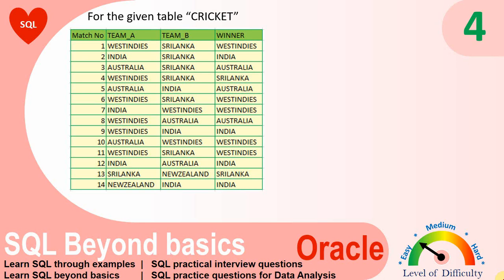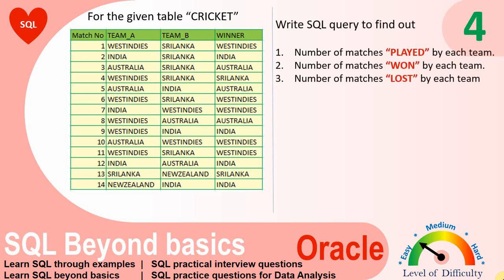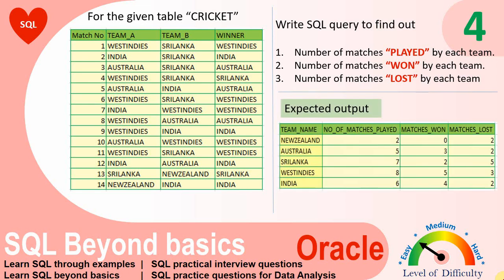What you need to do is write a SELECT statement to display the number of matches played by each team, the number of matches won by each team, and the number of matches lost by each team. For example, New Zealand played against Sri Lanka and against India — so totally New Zealand played two matches. They didn't win any matches, so you say zero matches won and two matches lost. Like that, you need to give results for all countries in this tournament.